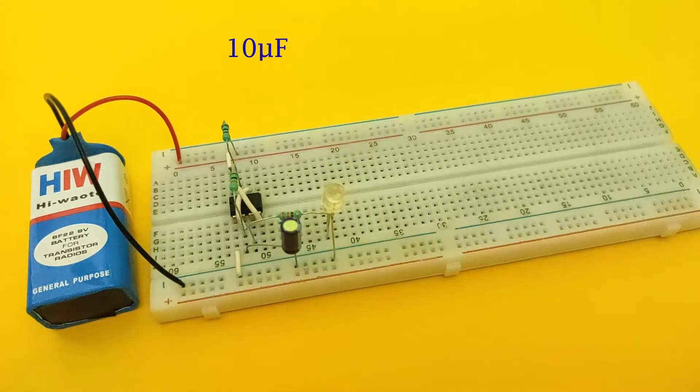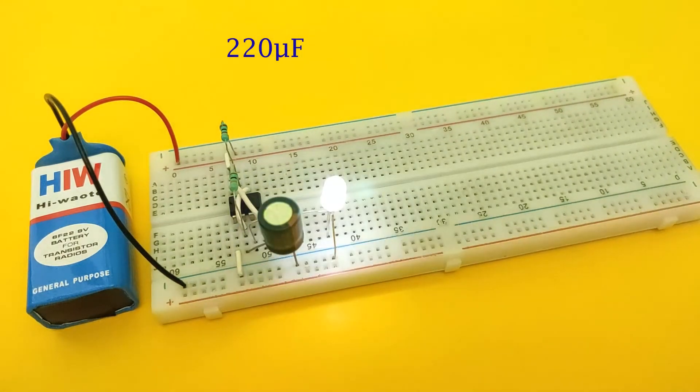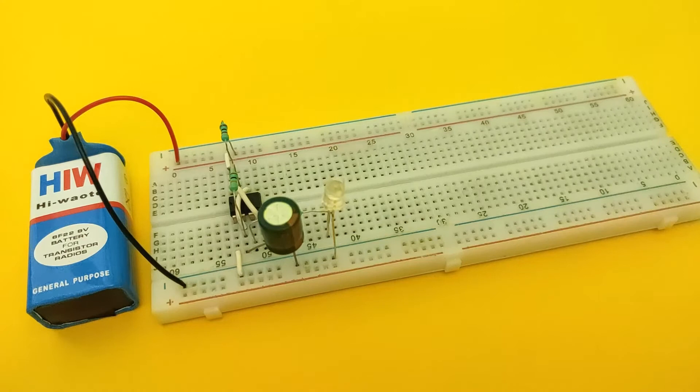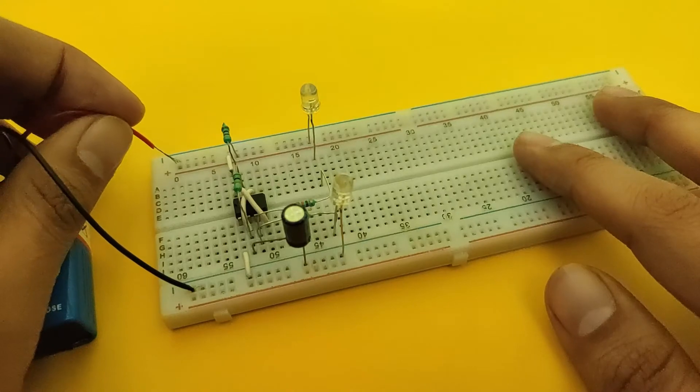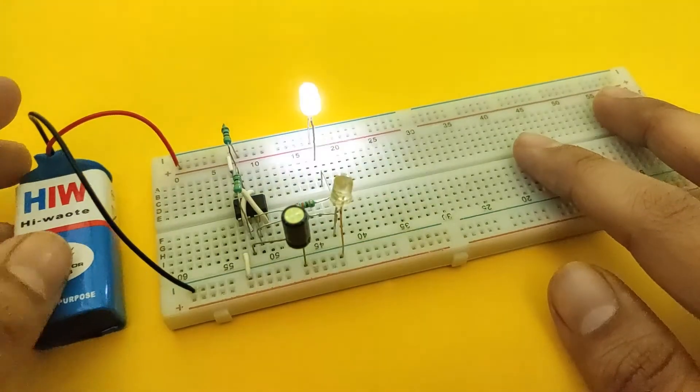Here also, you can change the flashing rate by varying the value of capacitance. Another LED can also be placed with its anode connected to positive rail and cathode connected to pin 3 via 330 ohm resistor to achieve alternate flashing.